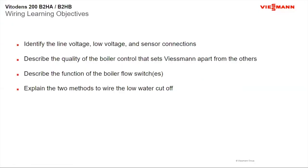Today's learning objectives: we're going to go over low voltage as well as line voltage, sensor placements, and note that all our sensors are auto-recognized — meaning once you plug them into the boiler, it knows it has them. We'll go over the quality of the controls that sets us apart, the flow switches and flow sensors — smaller models have flow switches, larger ones have ultrasonic sensors. We'll also cover a couple of ways to wire in your low water cutoff. In most cases, flow switches and flow sensors are approved as your low water cutoff.